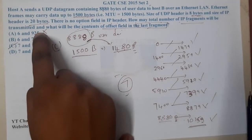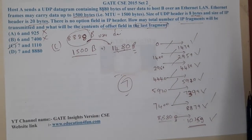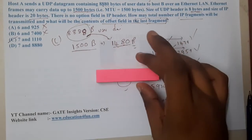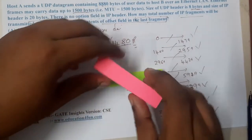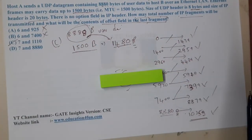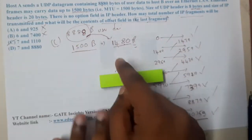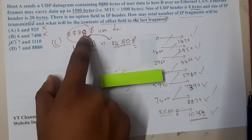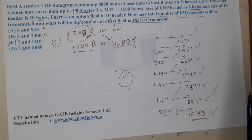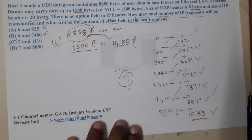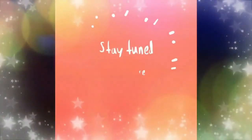A critical reminder: do not forget to add the 8-byte UDP header to the user data. If you skip that step, you get a different offset and land on option A — which is wrong. Remember, TCP or UDP data including its header is treated entirely as data by the IP layer, so the header must not be subtracted. That's the key insight for this type of question.